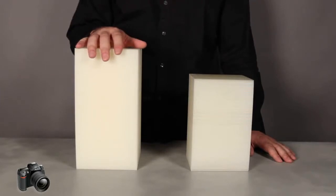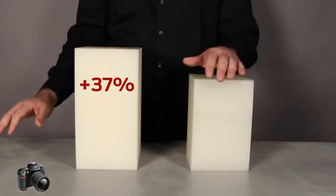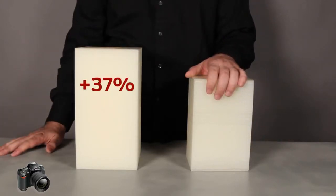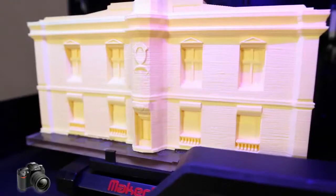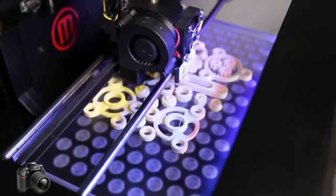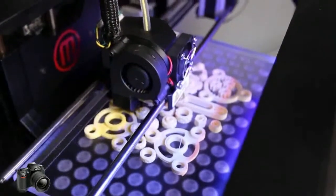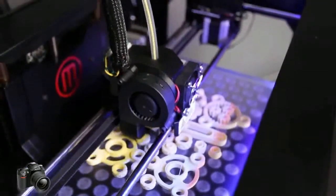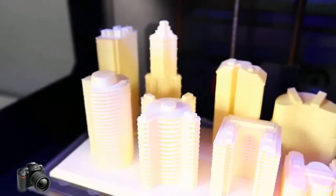The volume of the build area on the MakerBot Replicator 2 desktop 3D printer is over 37% bigger than it was for the original MakerBot Replicator. And that means more space for your ideas. Place an entire project with multiple pieces on one build plate and save yourself time. This is a machine made for multitasking.